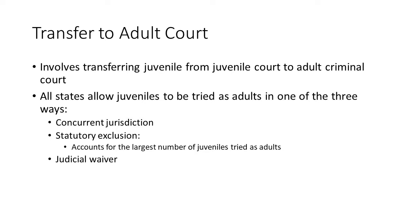Statutory exclusion, also called legislative waiver, accounts for the largest number of juveniles tried as adults. This type of waiver brings certain juvenile offenders into the criminal justice system at the point of arrest and bypasses the juvenile justice system altogether. By statute, it specifies which offenses go to adult court — for example, murder or aggravated robbery — and also which ones are excluded, like traffic tickets. It removes the discretion from both the prosecutor and the court.